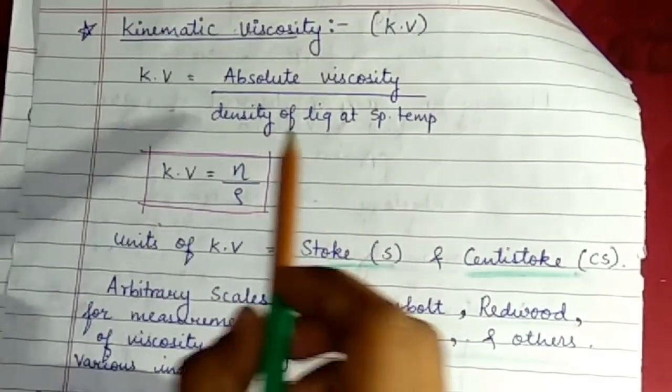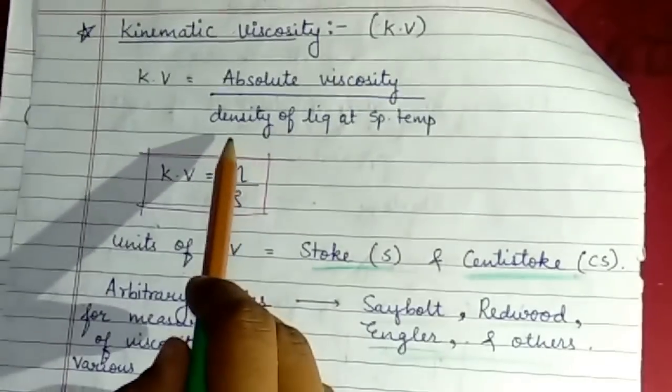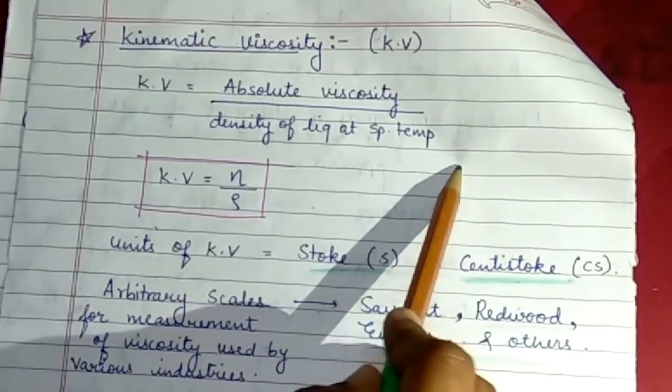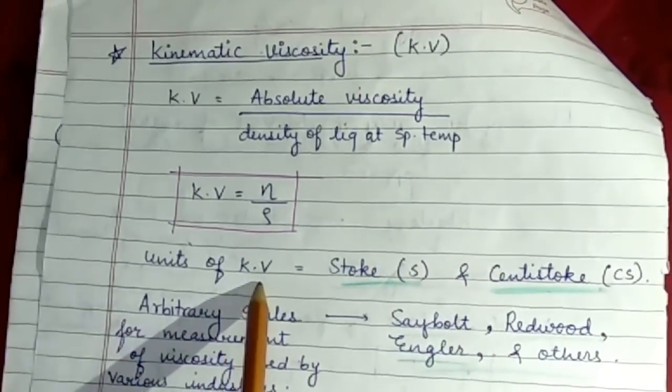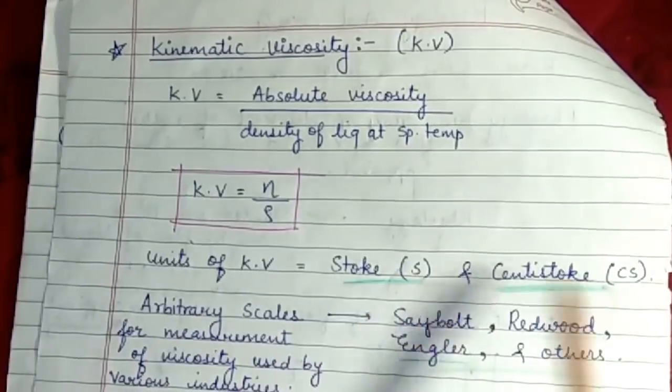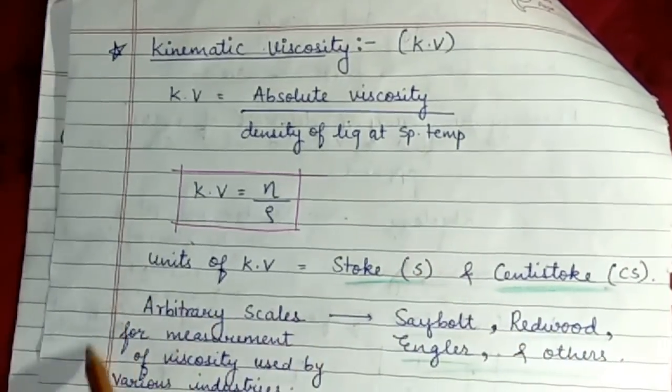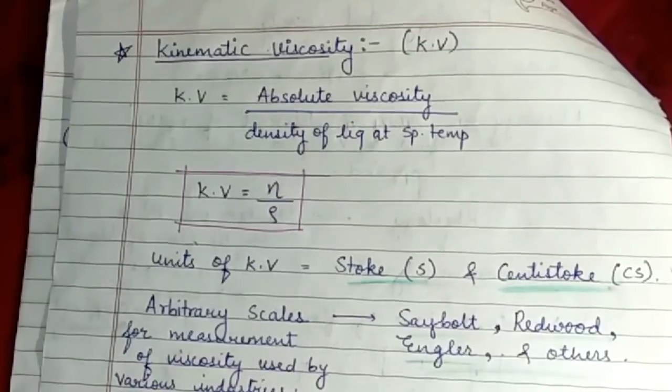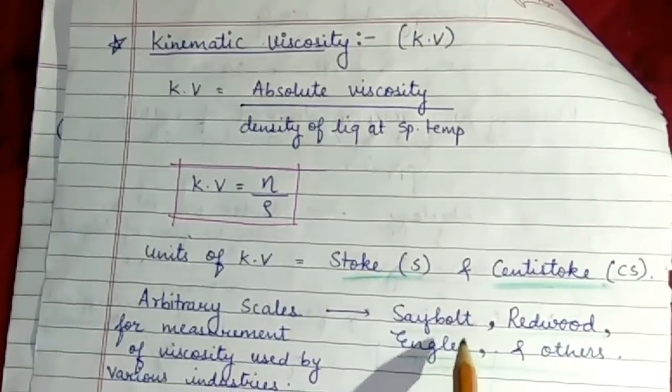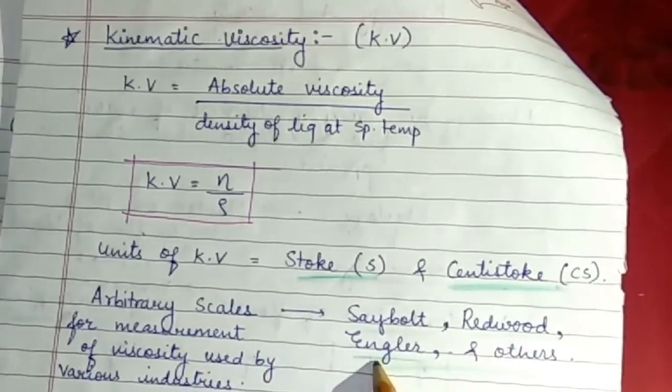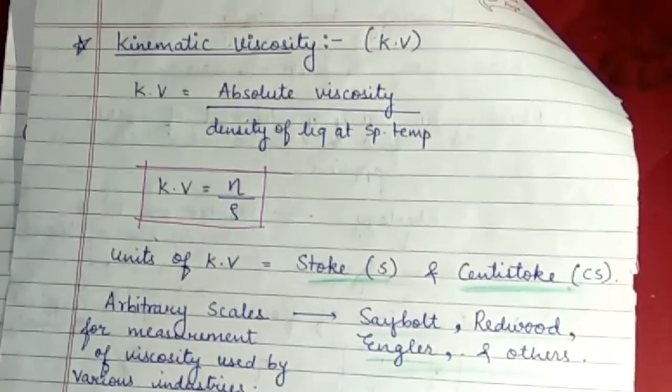Kinematic viscosity equals absolute viscosity upon density of liquid at specific temperature. The unit of kinematic viscosity is stoke and centistoke. Various arbitrary scales for measurement of viscosity used by various industries include Seybolt, Redwood, Engler, and many others.